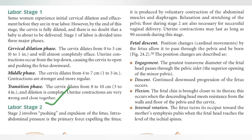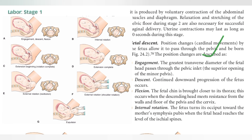Relaxation and stretching of the pelvic floor during Stage Two are also necessary for a successful vaginal delivery. Uterine contractions may last as long as 90 seconds during this stage. The fetus undergoes cardinal movements to pass through the pelvis and be born. The first cardinal movement is engagement, where the greater transverse diameter of the fetal head passes through the pelvic inlet — the superior opening of the minor pelvis.